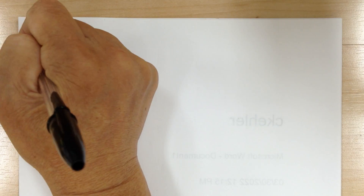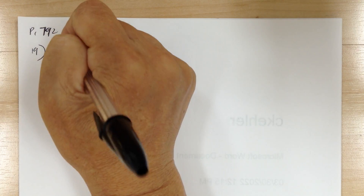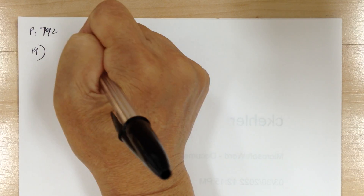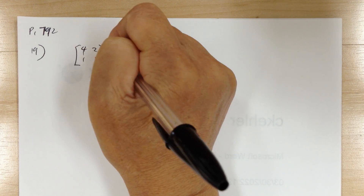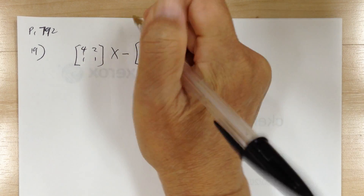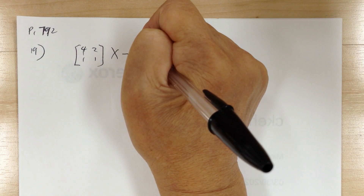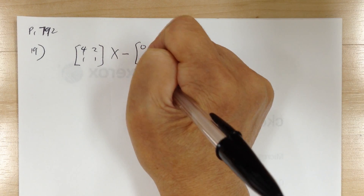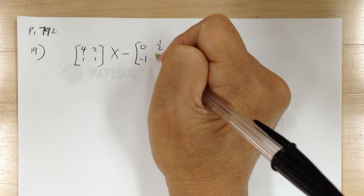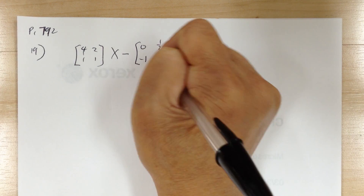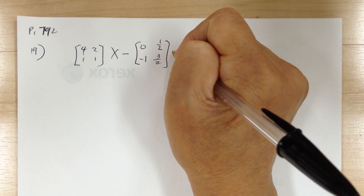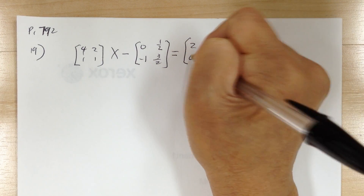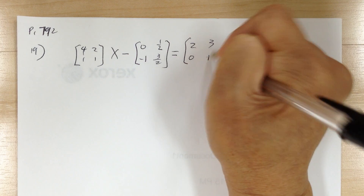Let's go to the next one: page 792, number 19. You have [4, 1; 2, 1] times X minus [0, 1/2; -1, 3/2] equals [2, 0; 3, 1].